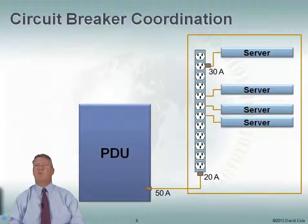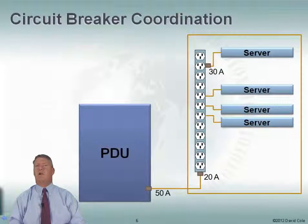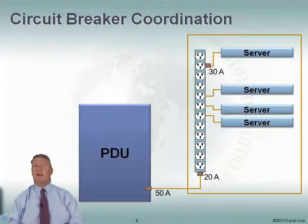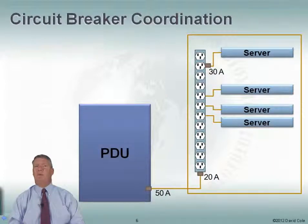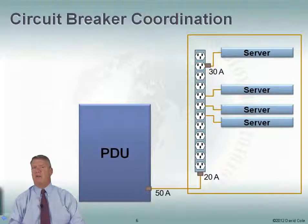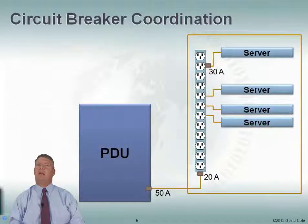I'm going to walk through an example of how circuit breaker coordination works. Here's a rack of equipment on the right and here's my PDU. I've identified a couple of different breakers. On the PDU there's a 50-amp breaker feeding out to a rack power strip — a rack PDU with a bunch of outlets. That strip has a 20-amp breaker on it, and there's also a breaker at the outlet level: a 30-amp breaker.